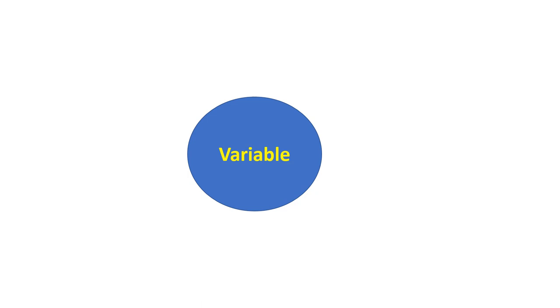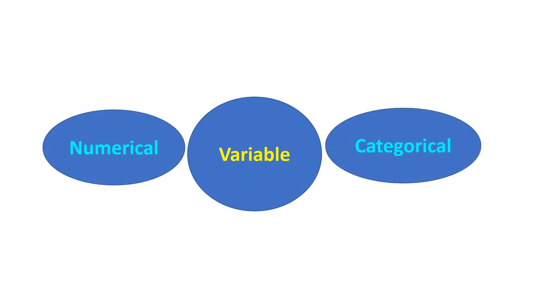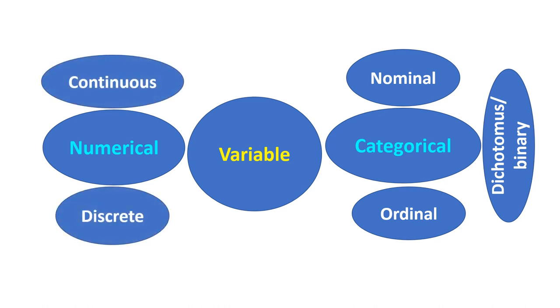What is a variable? It is something that varies, that can take any value. A variable can be of two types: categorical and numerical. Categorical variables can be nominal, ordinal, dichotomous, or binary. Numerical variables can be discrete or continuous.